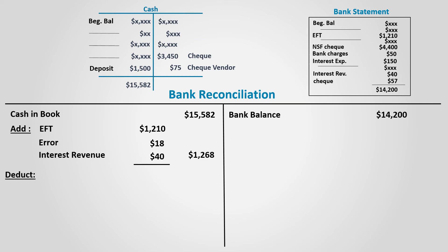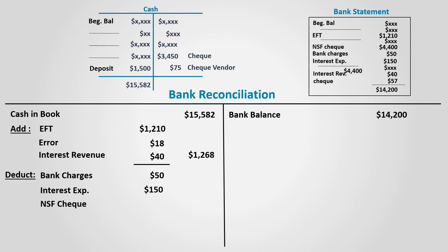Then we will deduct the following from the book's side. Bank charges and interest expense are deducted after noticing that the bank has deducted them but they have not been reflected in the books. NSF is deducted since this amount was added to the cash account on receiving the check from the customer, assuming the money would be received through the bank clearing process. However, it was not, because the customer didn't have sufficient cash balance in their bank account.